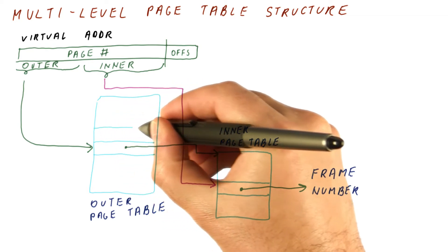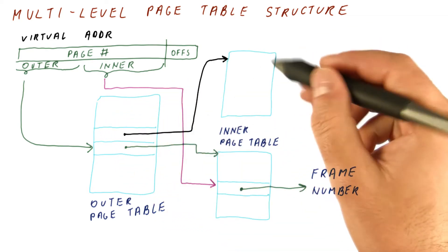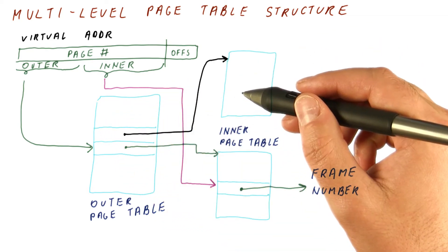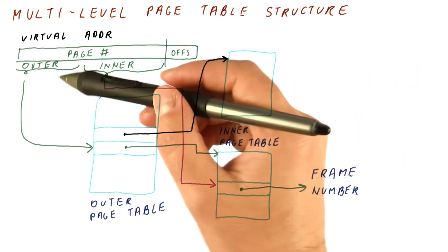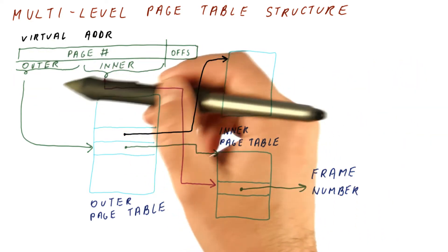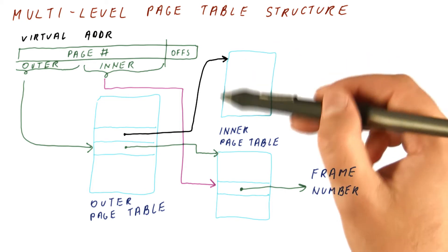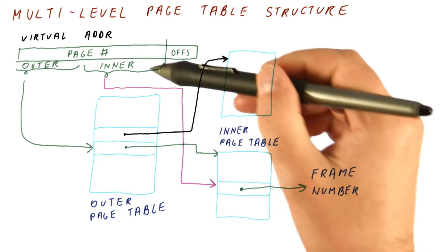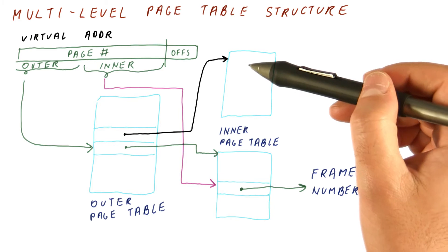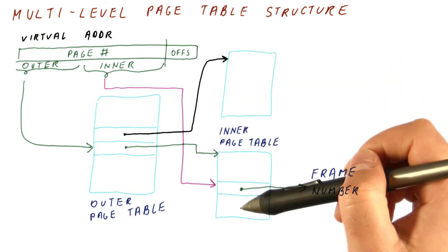Another entry in the outer page table will point to a different inner page table. So pretty much what we have is the outer page number tells us which of the small inner page tables to use, and the inner page number tells us where in each of the page tables we need to look at.